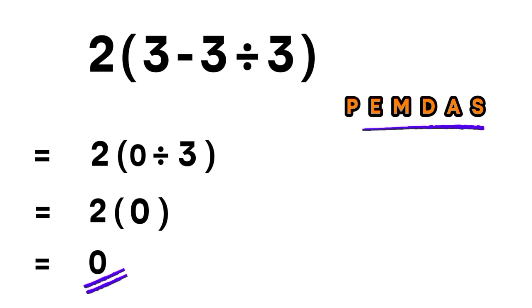We first do parentheses, then exponents, then multiplication and division, and finally addition and subtraction. Remember, multiplication and division have equal priority, and we work from left to right. And the same goes for addition and subtraction.